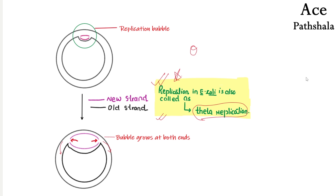There are other kinds of replication too, like d-loop replication and rolling circle replication. The replications are different in different organisms, so we will discuss different types of replication in different videos.